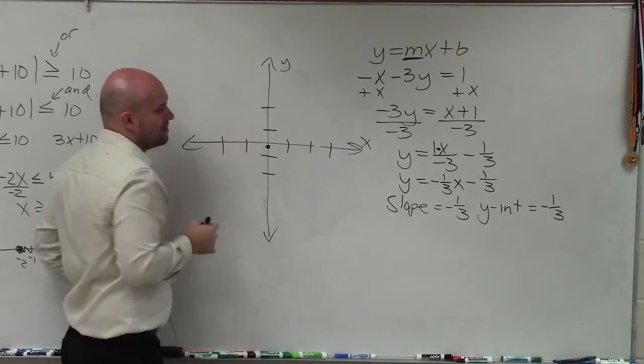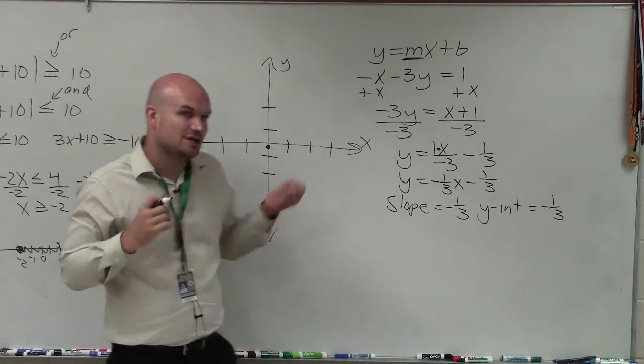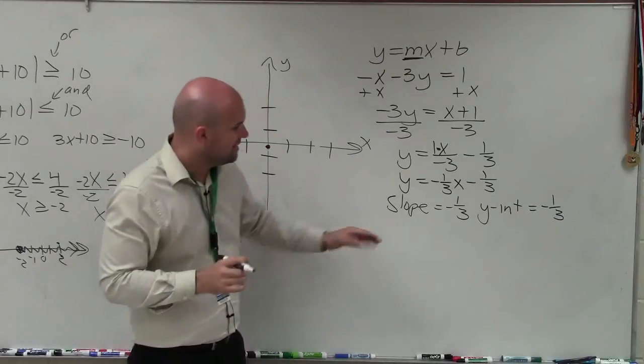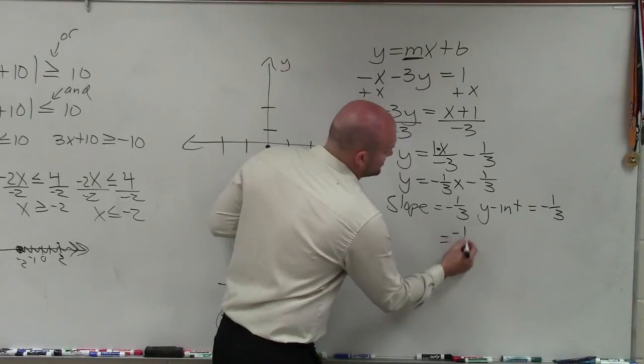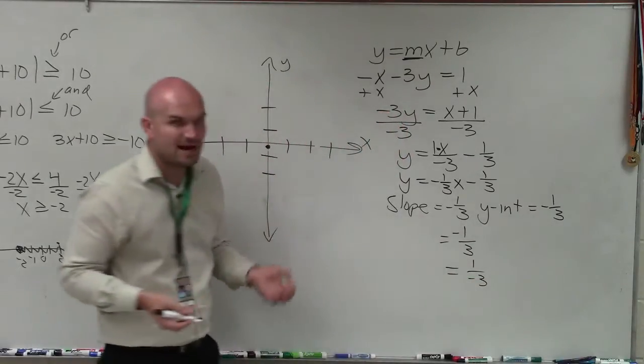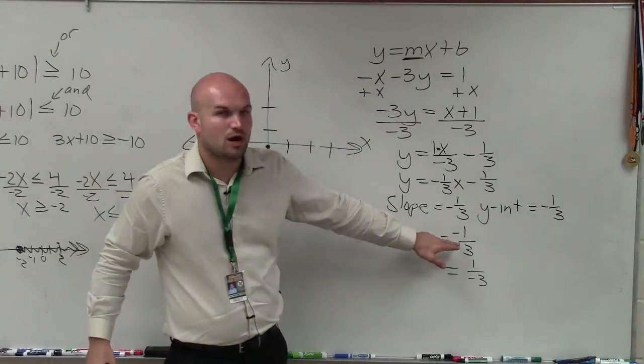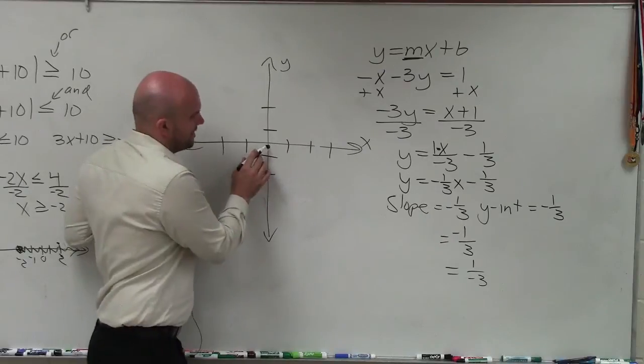To graph the points, remember the slope just tells us what is going to be the change in your y and x values between any two points. You have a negative sign. This negative sign we can attribute to the numerator or to the denominator. It doesn't really matter. Let's attribute it to our numerator for this case. So I have negative 1 third.